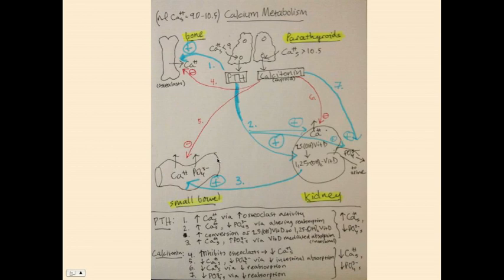The net effect of PTH is to decrease phosphate and increase calcium in the serum. Patients with abnormally high parathyroid hormone levels will have high calcium and low phosphate in their serum.